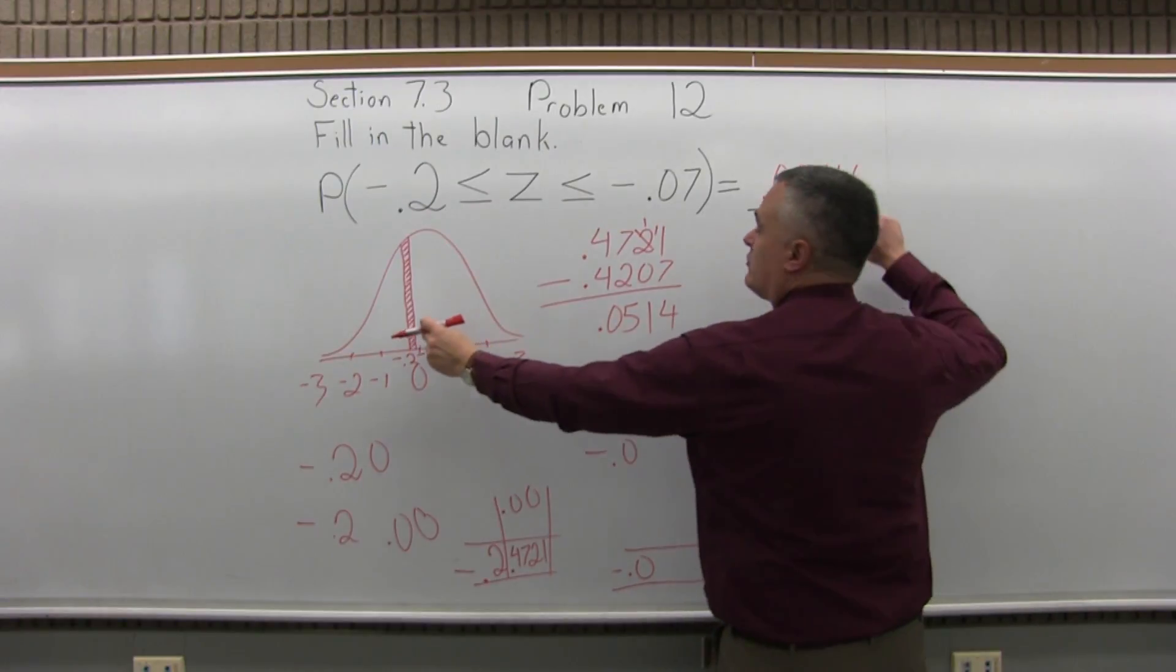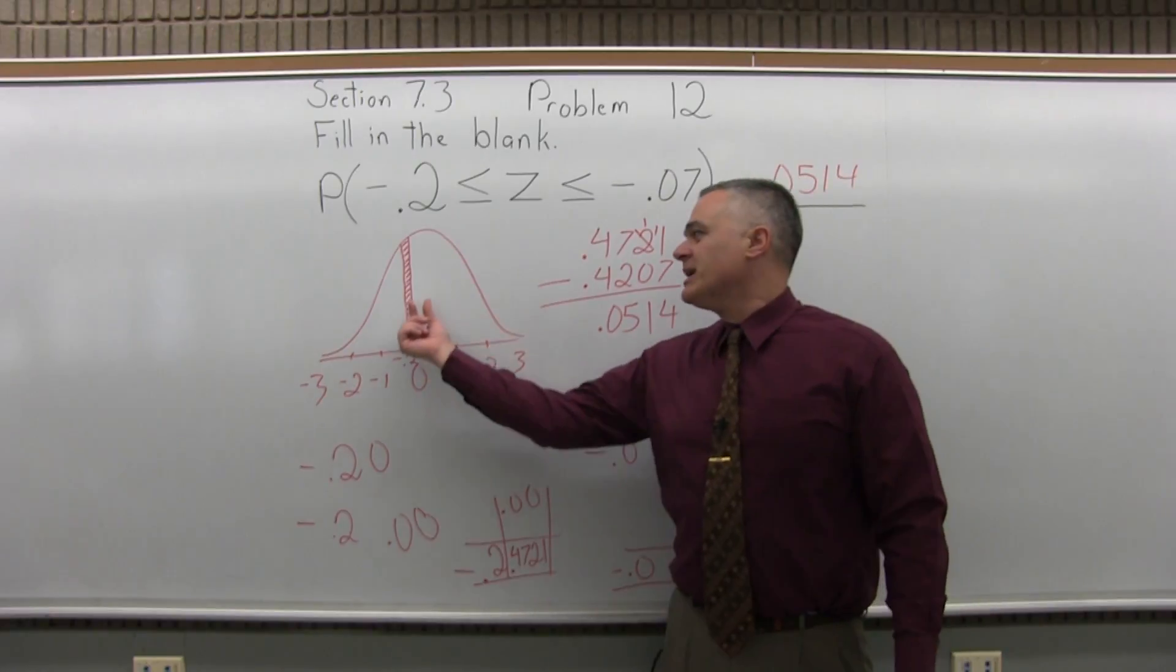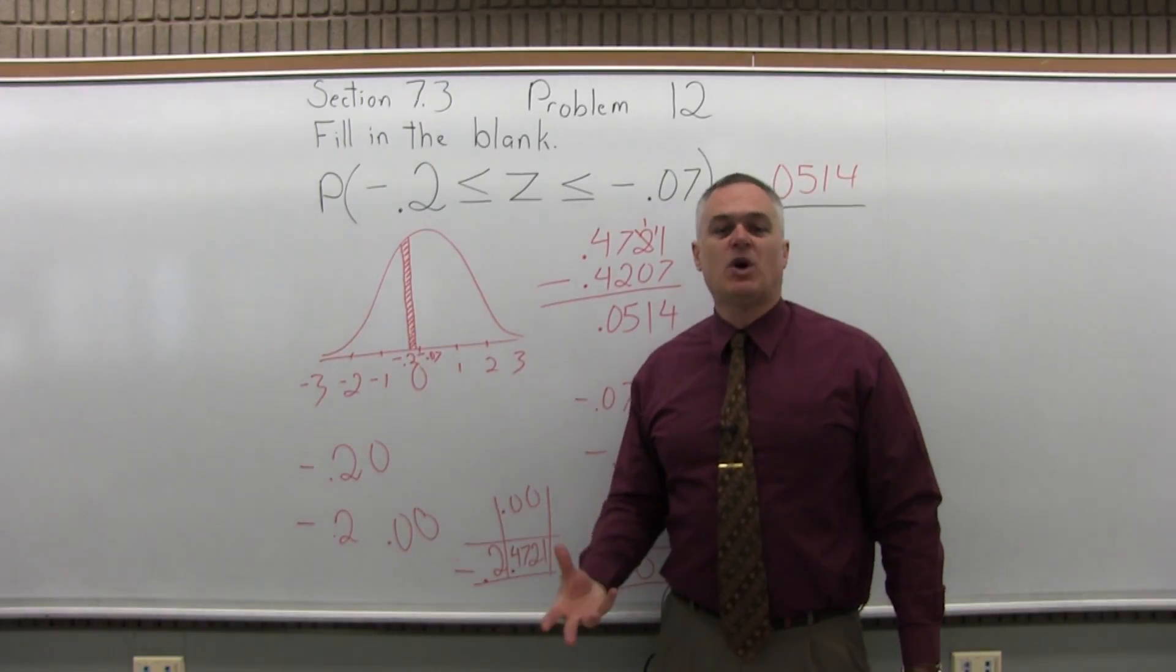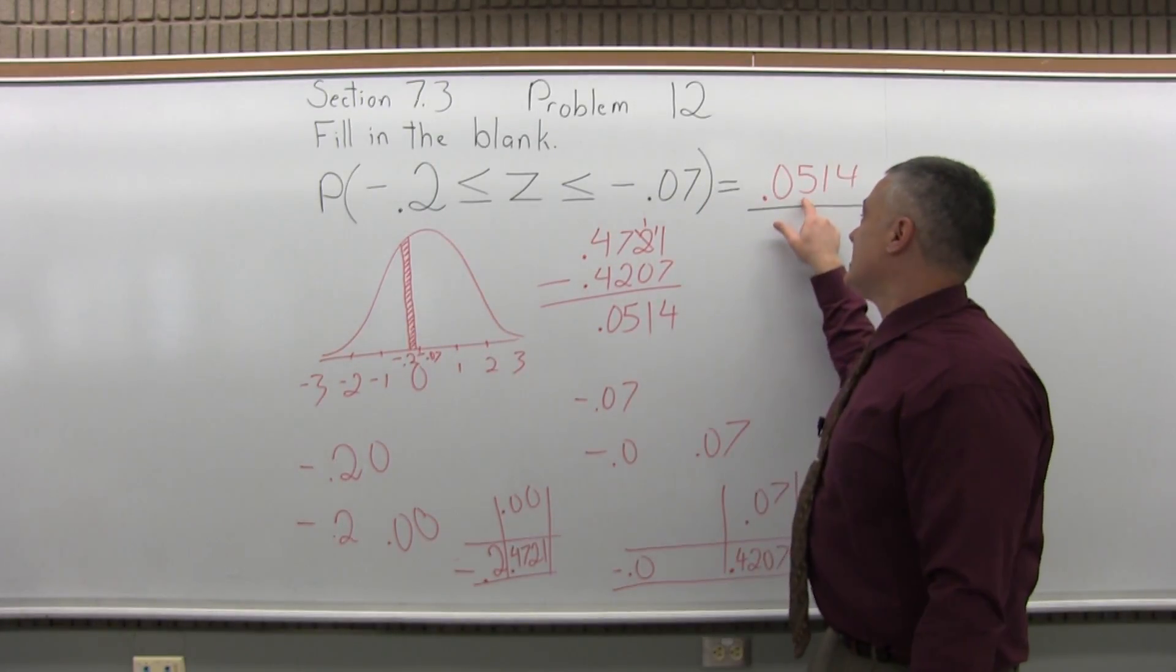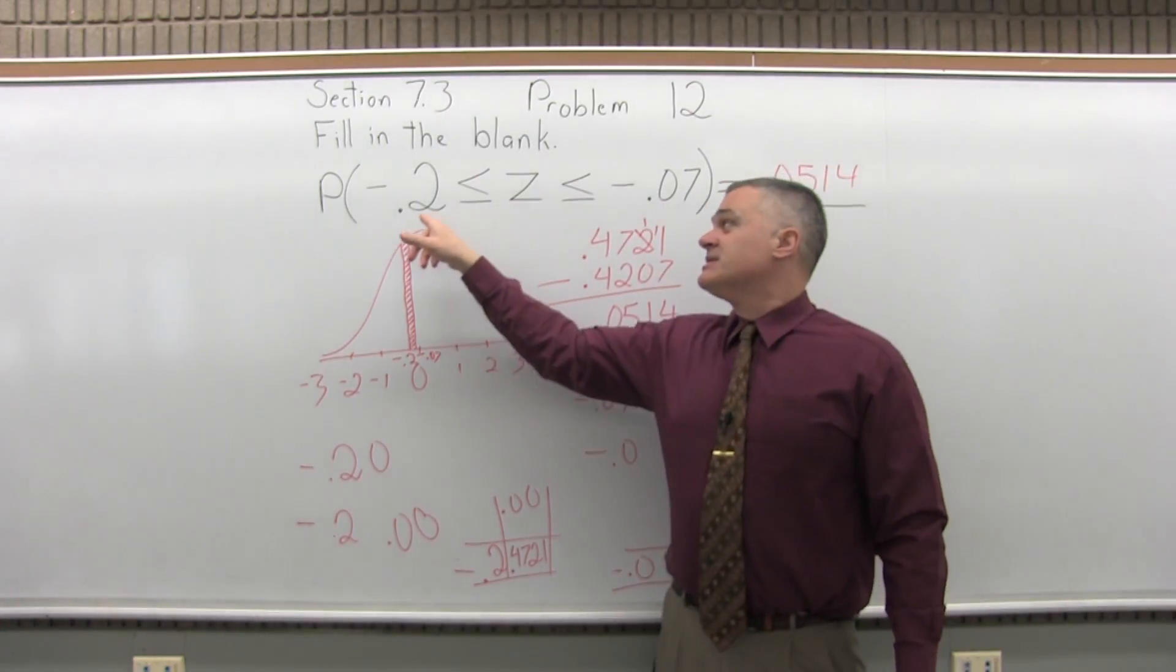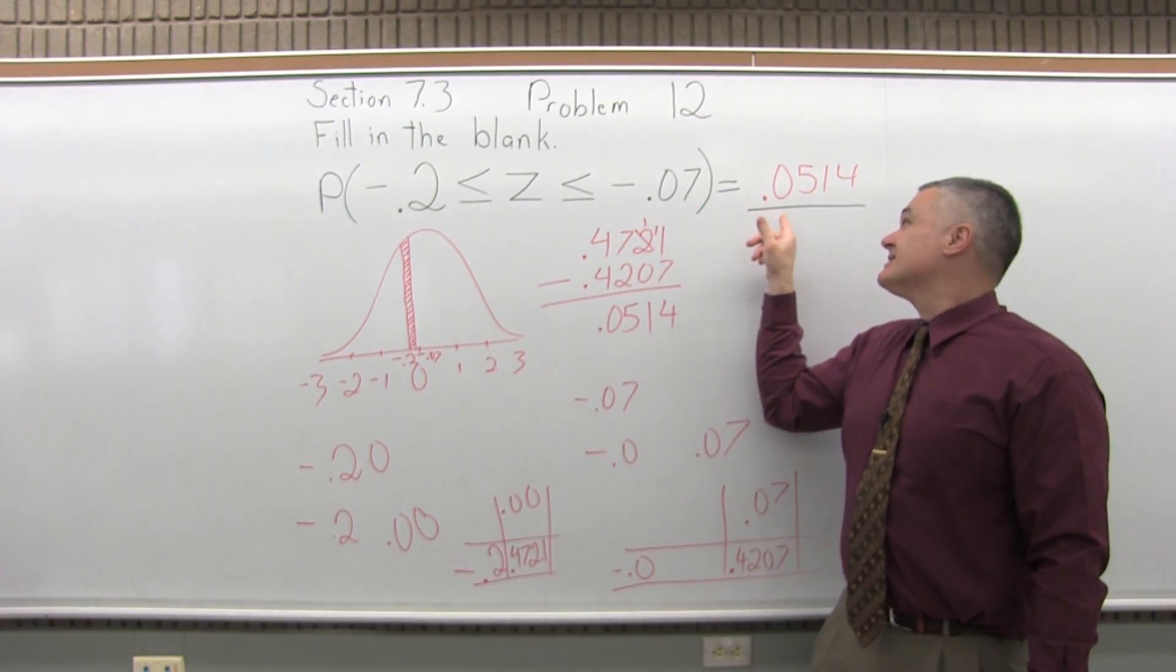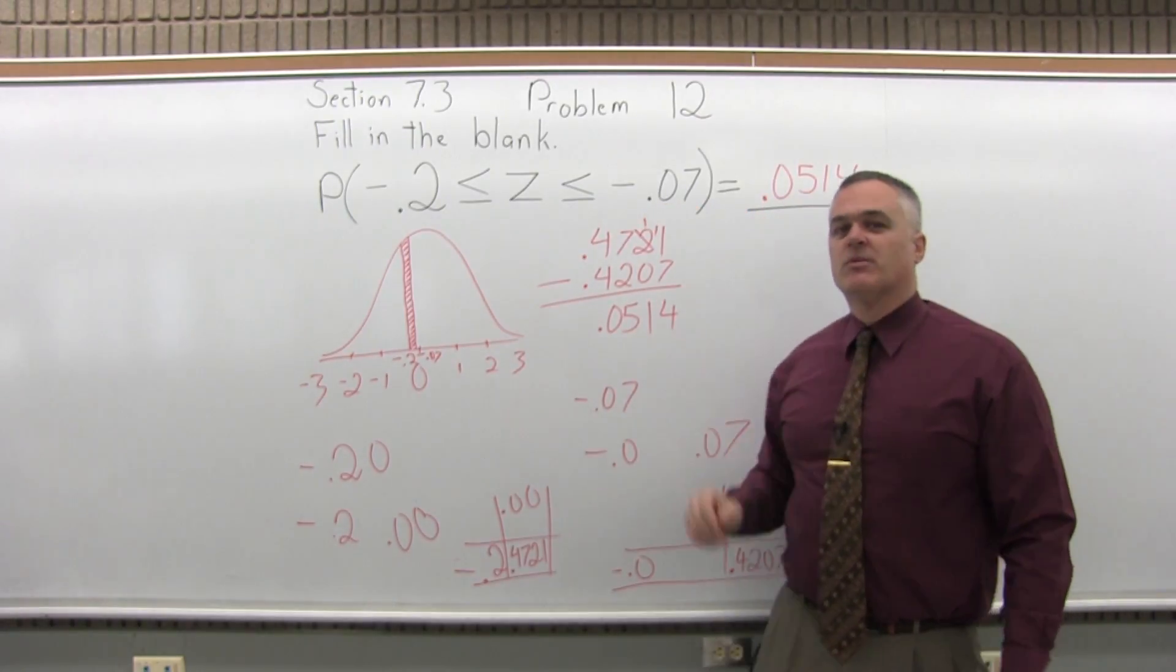And based on my drawing, I expected a small area, such a narrow band, such a small amount of area, I expect a small probability. So the answer is a little bit more than 5% chance. So the probability that Z is between negative 0.2 and negative 0.07 is a slight bit more than a 5% probability.